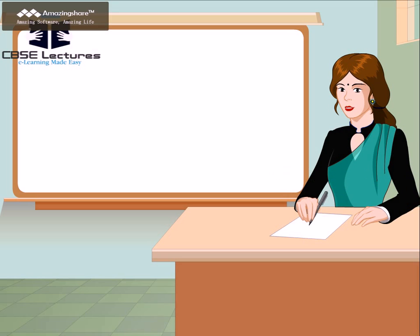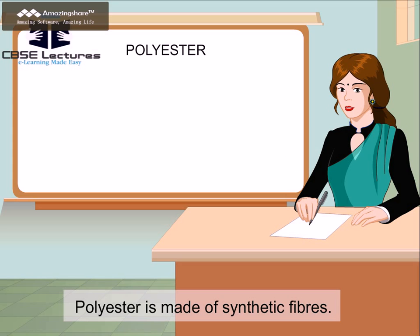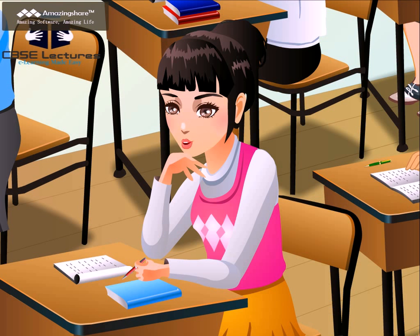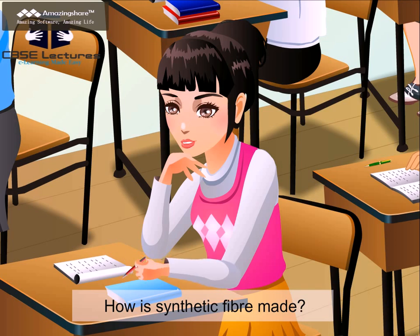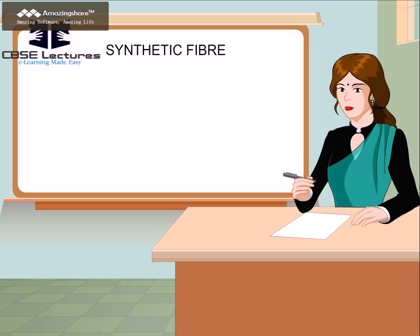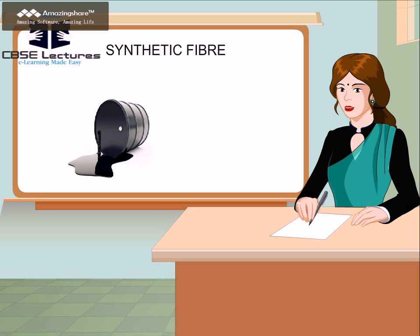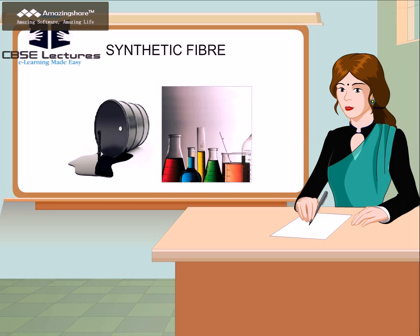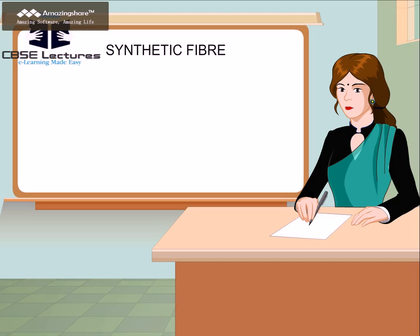Apart from these, there are also man-made fabrics called polyester. Polyester is made of synthetic fibers. Ma'am, how is synthetic fiber made? Synthetic fibers are made from chemical substances. A number of processes are involved in the formation of synthetic fibers. They use raw material of petroleum origin which are called petrochemicals. Just like a necklace is made of many beads,